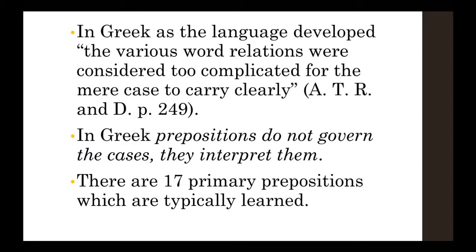We have 17 prepositions in Greek. There are several others, but they fluctuate between prepositions and adverbs. There are 17 primary ones we look at. Amphi is one, but the only time we ever find it in the Greek text is in composition — it's always connected to a word, never stands alone. So we don't normally deal with it, but it's there so you know.